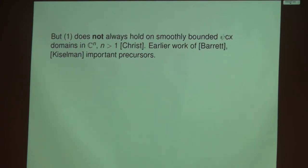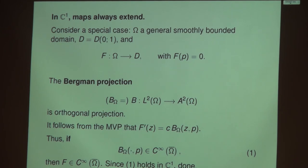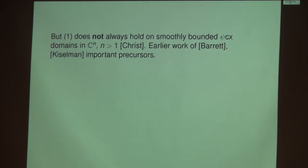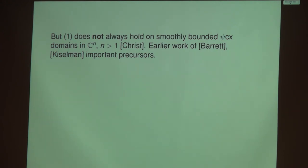That fact is always true — it's a consequence of being able to solve the Dirichlet problem with smooth dependence. It's exactly that fact that doesn't happen in general on smoothly bounded pseudoconvex domains in dimension bigger than one. That's not obvious, and wasn't obvious in the field for many years. It's a theorem essentially due to Mike Christ, although earlier work of Dave Barrett and Sibony were important. It's still a mystery — we don't understand where those singularities come from. We have smoothly bounded domains, and yet the Bergman kernel is not smooth up to the boundary.